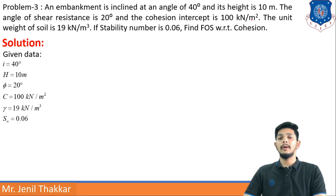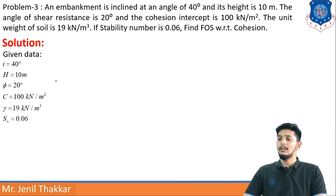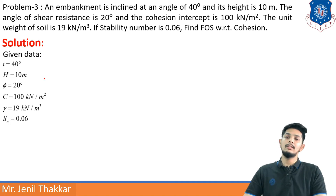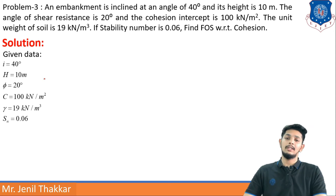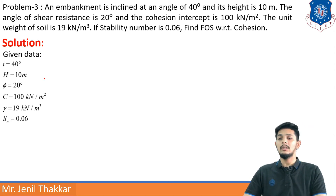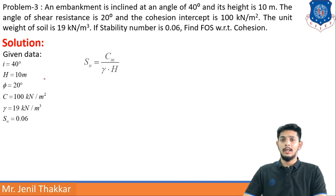Given data: inclination angle i = 40 degrees, H = 10 meters, φ (angle of shearing resistance) = 20 degrees, c (cohesion intercept) = 100 kN/m², γ = 19 kN/m³, stability number SN = 0.06.